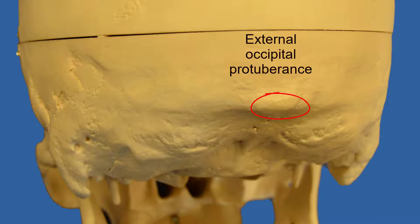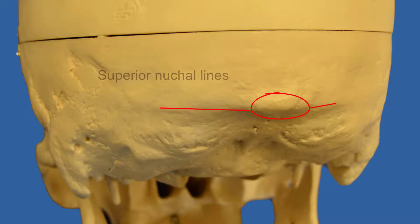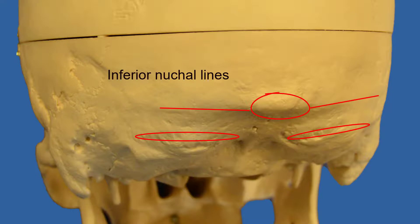Some other features which tend to be a little more subtle are lines, and these lines are referred to as nuchal lines. Nuca refers to the nape of the neck. On this particular specimen, we can see on either side of the external occipital protuberance the superior nuchal lines. There are also inferior nuchal lines visible on this specimen.